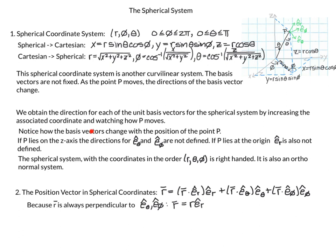We'll notice how the basis vectors change with the position of point P. If P lies on the z-axis, the directions of the basis vectors with respect to theta and phi are not defined, and if P lies at the origin, our basis vector e_r is also not defined. The spherical system with coordinates in the order r, theta, and phi is a right-handed and orthonormal system: dot any basis vector with itself and you get one; dot any two different basis vectors and you get zero.